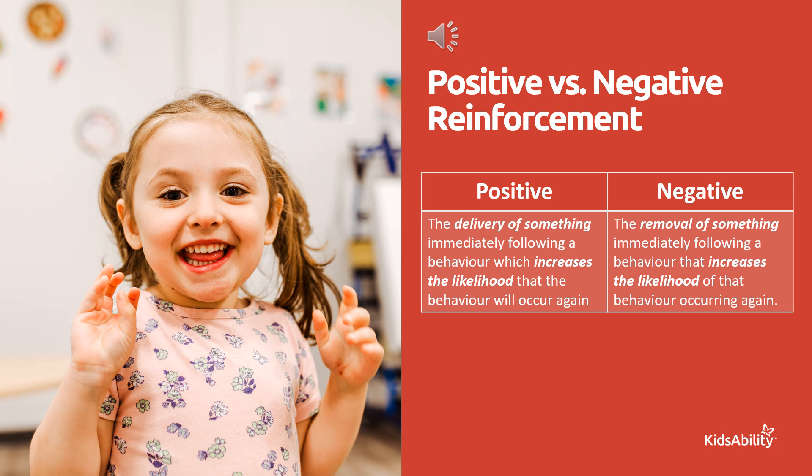There is both positive and negative reinforcement, and that doesn't mean one is good and one is bad. Positive reinforcement involves presenting something immediately after the behavior occurs — an addition of something — which increases the likelihood that the behavior will occur again. For example, getting a sticker when you complete your homework. Negative reinforcement involves removing something immediately following a behavior, so the removal increases the likelihood that the behavior will occur again. For example, completing chores to avoid being nagged, or putting a seatbelt on when the beeping begins — you want the beeping to go away. Even going to the bathroom is negative reinforcement: you're removing the feeling, and you're likely to go to the bathroom again.